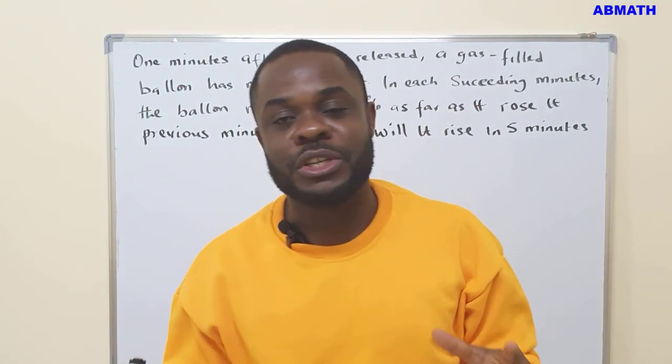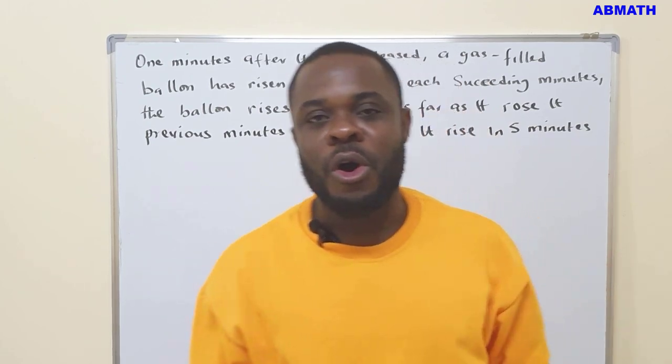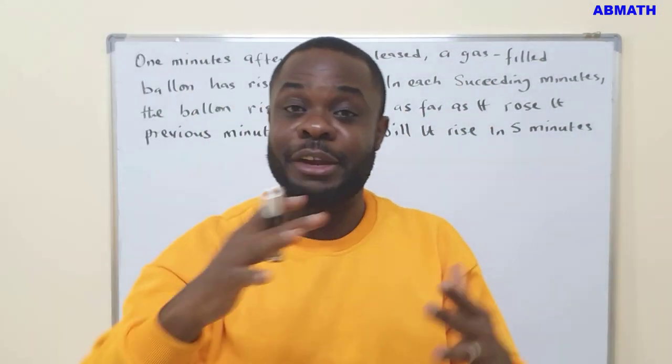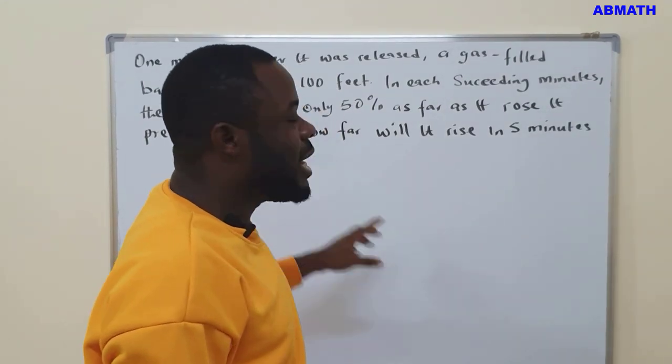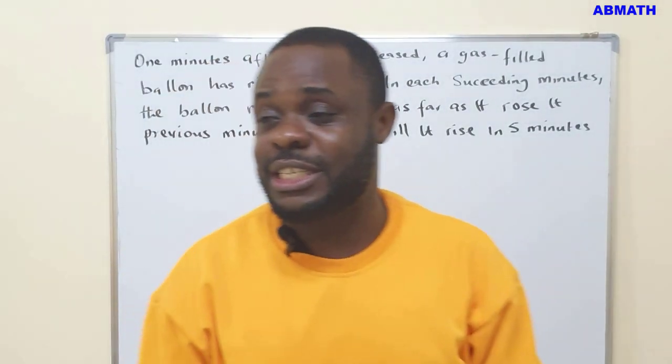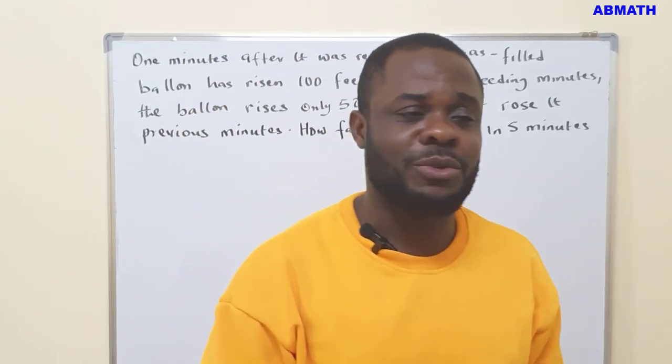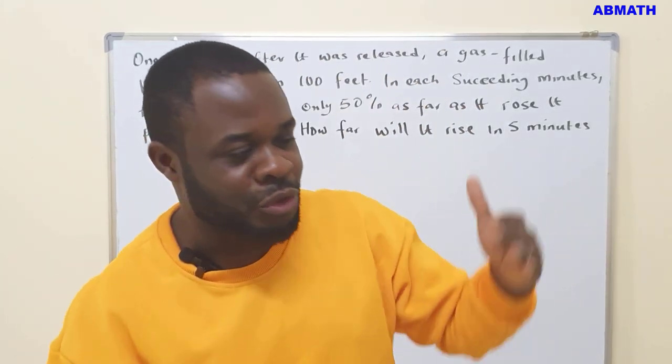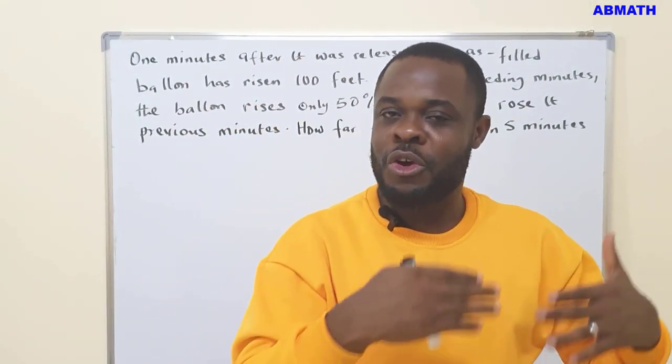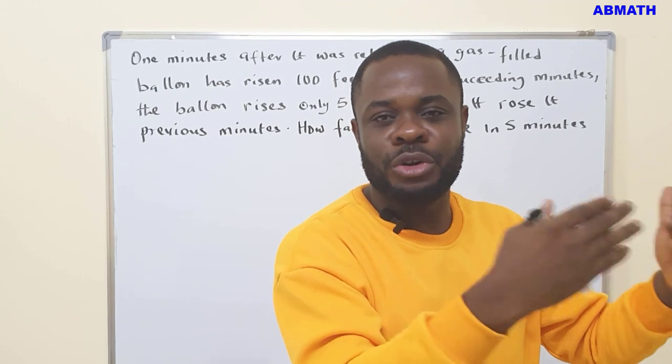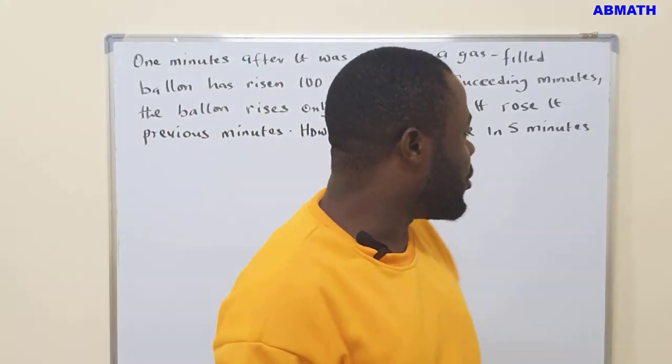So what the question is talking about is how far the accumulation, the sum of the total rise in five minutes. That is what this problem is trying to tell us. Now, how do you know if this is a geometric sequence or an arithmetic sequence? We know that geometric sequence comes with common ratio, while arithmetic sequence comes with common difference.